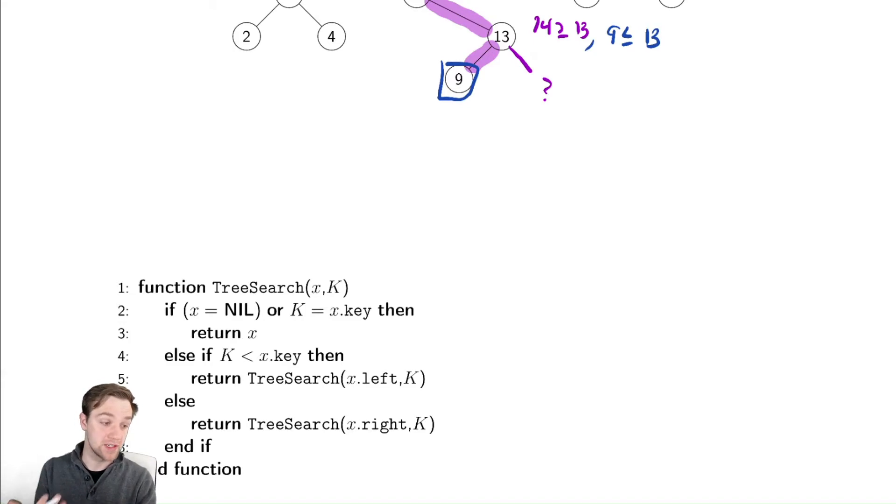Returning x, if it wasn't nil, would return the correct value. And now, the next part, notice I have just a less than here. That is by convention.